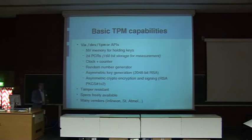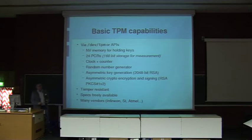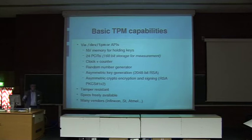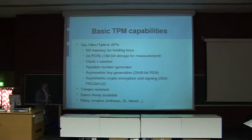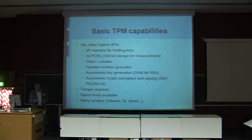There are some capabilities of Trusted Platform Module. These capabilities can be reached via /dev/tpm or some specific applications or APIs. It has non-volatile memory for holding your own keys, platform configuration registers — 24 registers, each holding up to 160 bits of data. There's a clock and a counter in it, a random number generator, and it can do asymmetric key generation, particularly RSA, as well as asymmetric crypto operations.